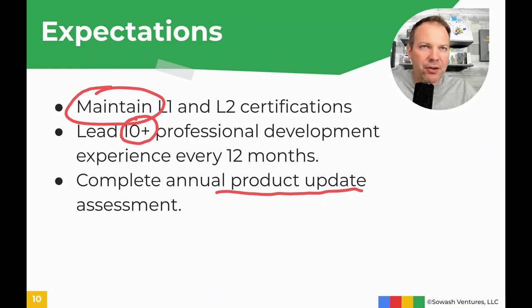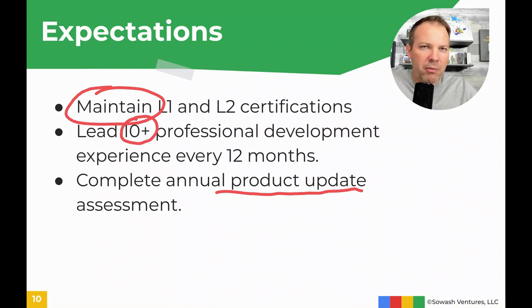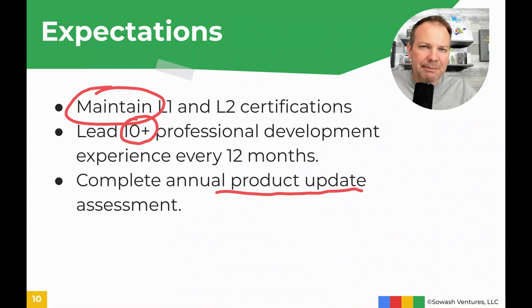The annual product update is typically published in January and you have a couple of months to take it. It's a very straightforward multiple-choice test, usually around 20 questions — nothing to be too worried about. It's a lot of work to become a Certified Trainer and to continue your certification, so let's talk about some of the benefits.